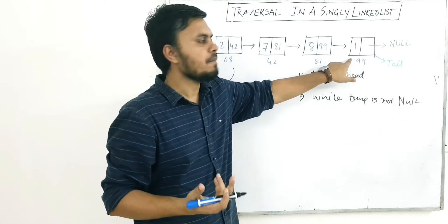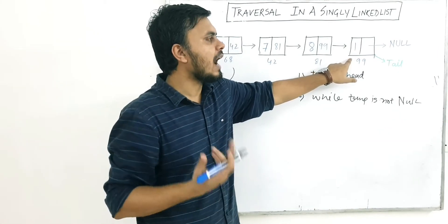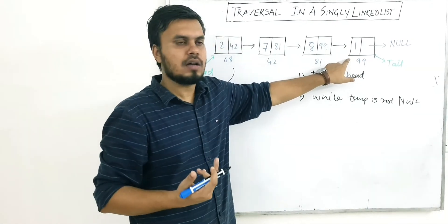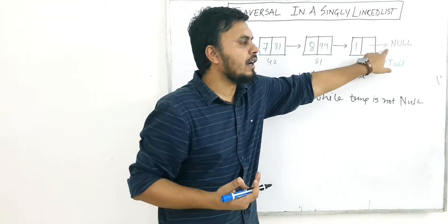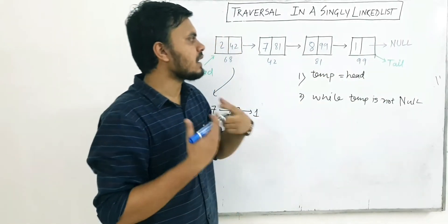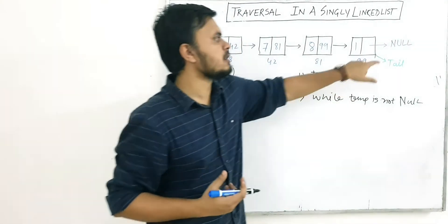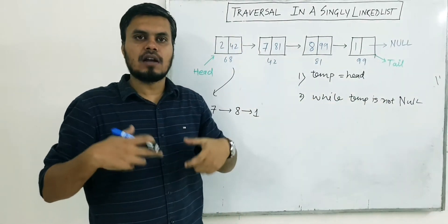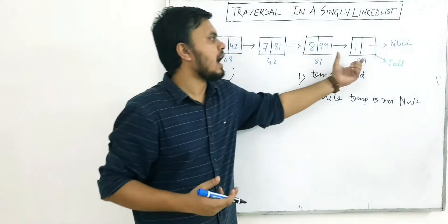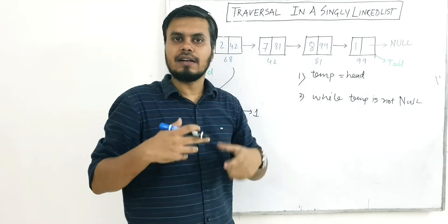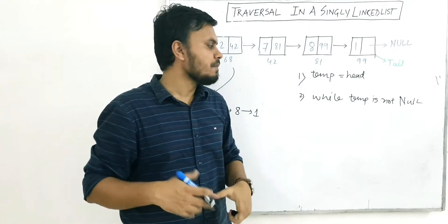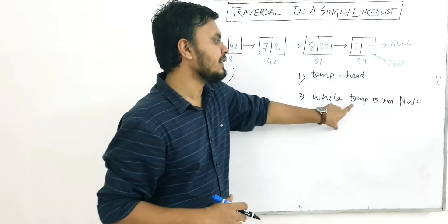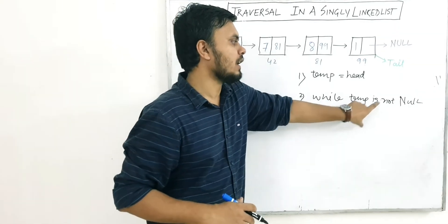You have to run this code until you reach the tail node. How do we identify the tail node? A tail node is a node whose address pointer is pointing towards null. So if you somehow reach the point where temp is null, it basically means you are at the tail. The loop condition is: while temp is not null.